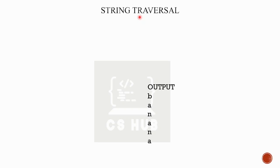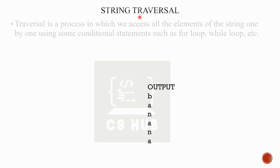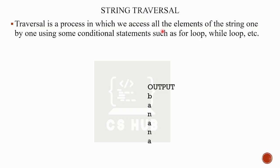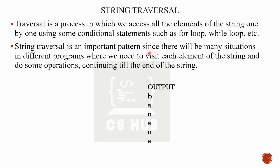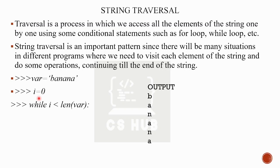This is called string traversal. Traversal is a process in which we access all the elements of the string one by one using some conditional statement or loops. String traversal is an important pattern. var is equal to 'banana'. We can use a while loop or a for loop — for i in var: print(i).